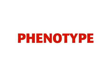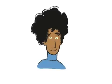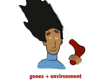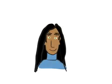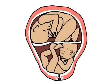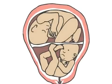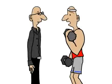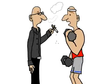Your observable traits, also known as your phenotypes, result from the interaction between your genes and the environment. This interaction begins in the womb and continues throughout your life.